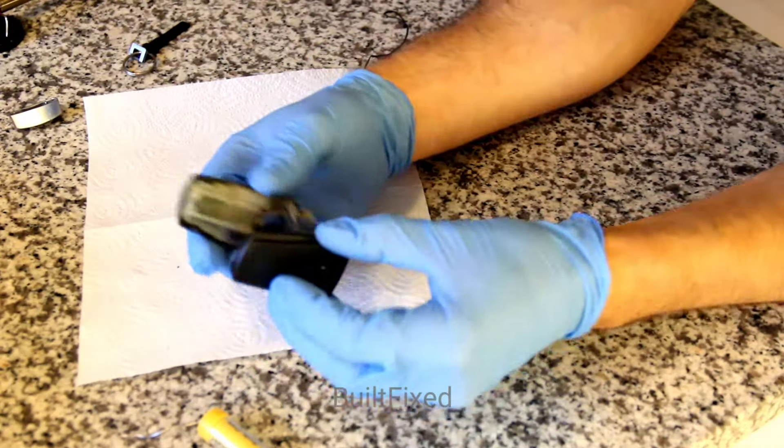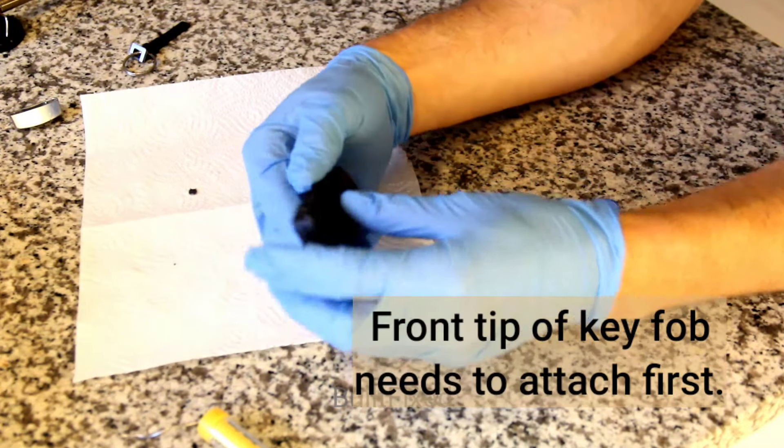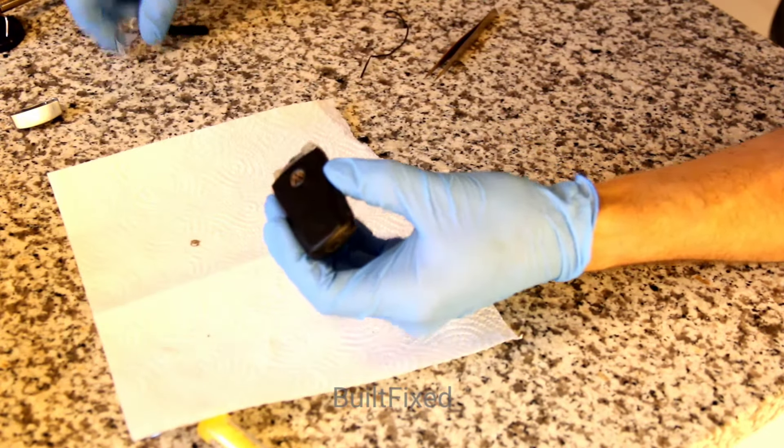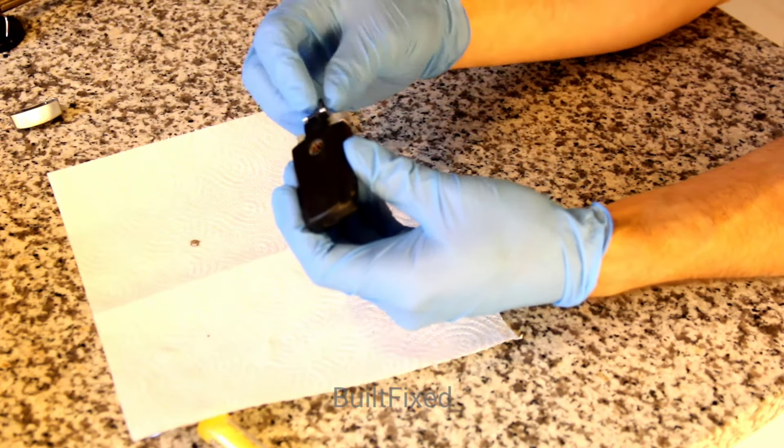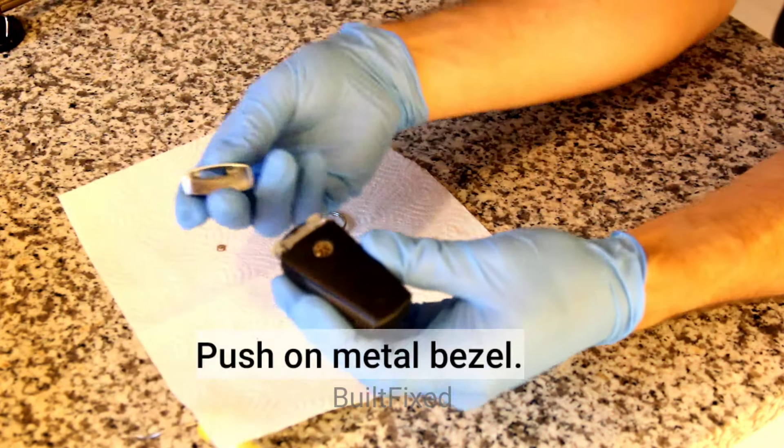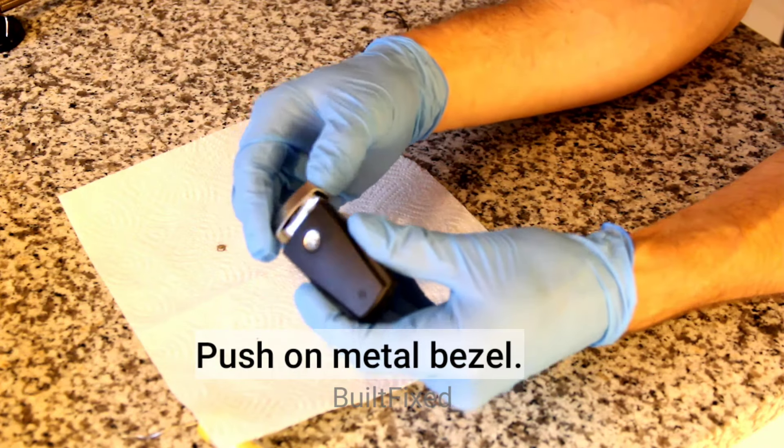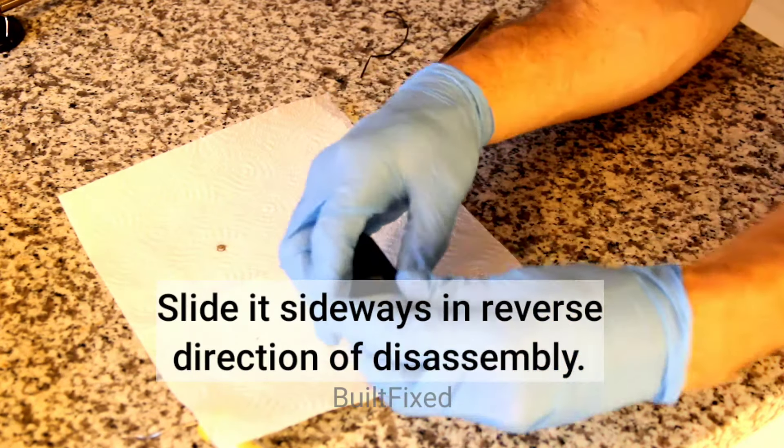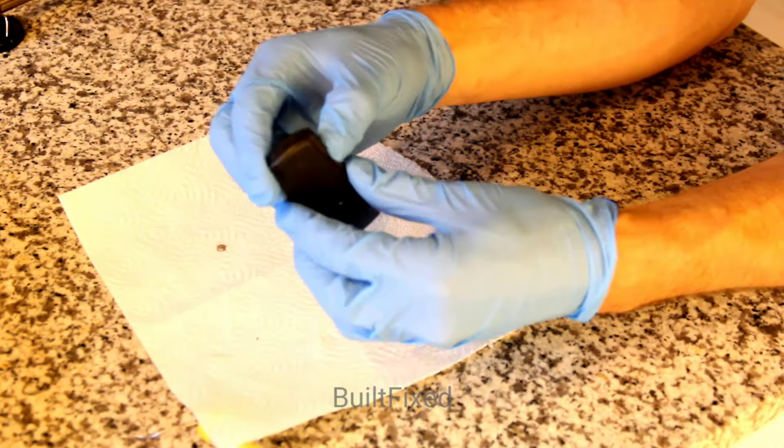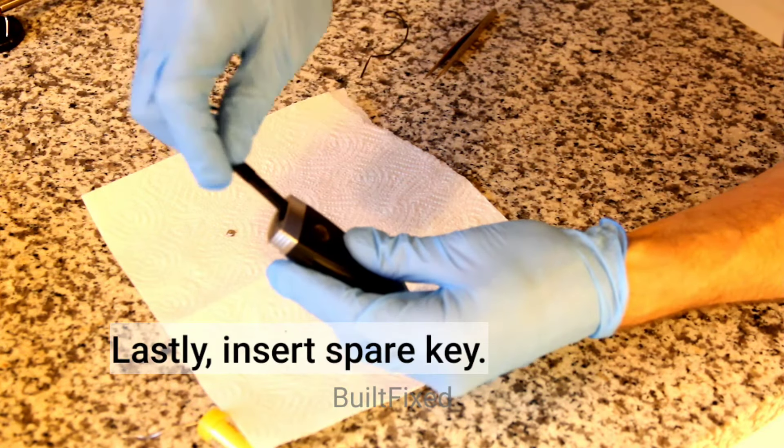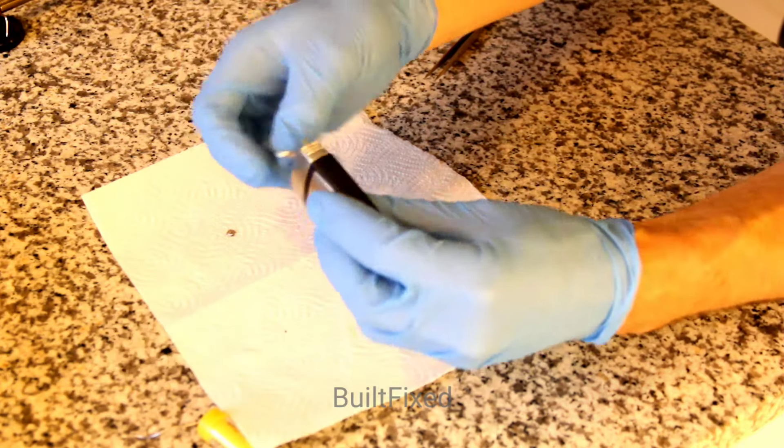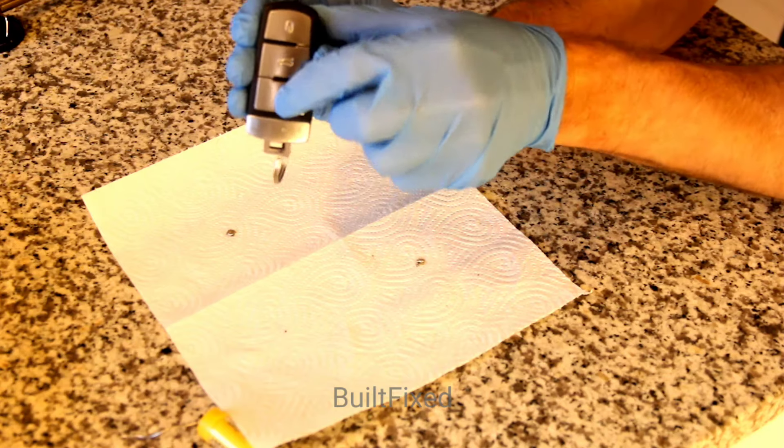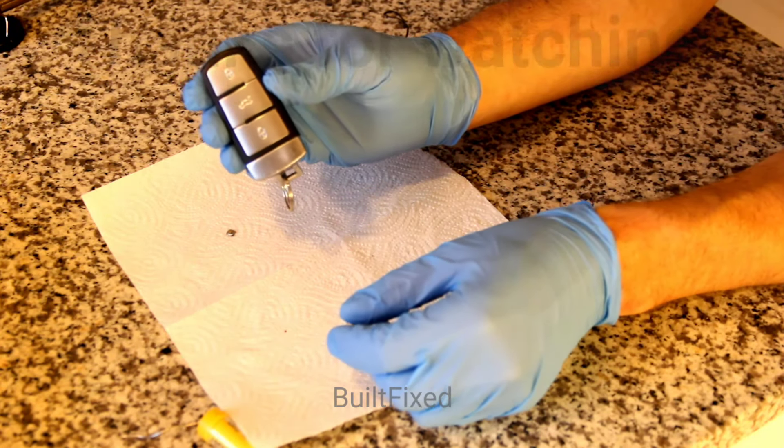So to reassemble, just go in reverse. Get our cover on and snap down. Now the key can go back in. I'm sorry, the metal cover goes back on again, and it slides over like so. And then the key can drop inside. Good luck on your project.